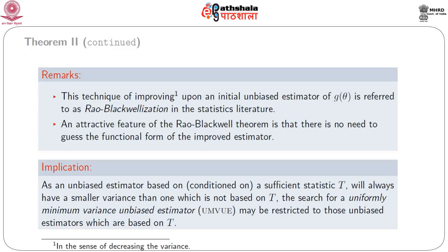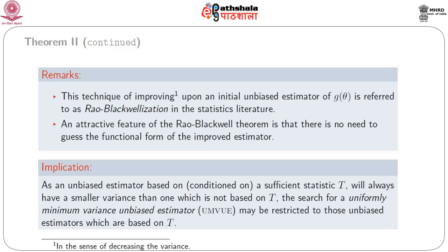The technique of improving upon an initial unbiased estimator is referred to as Rao-Blackwellization in the statistics literature. An attractive feature of the Rao-Blackwell theorem is that there is no need to guess the functional form of the improved estimator. The implication is that an unbiased estimator based on a sufficient statistic T will always have a smaller variance than one not based on T, so the search for a UMVUE may be restricted to unbiased estimators based on T.